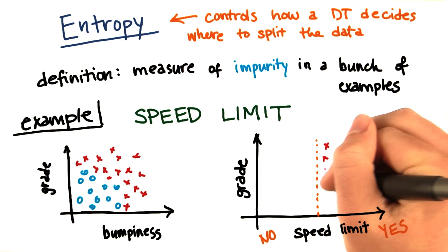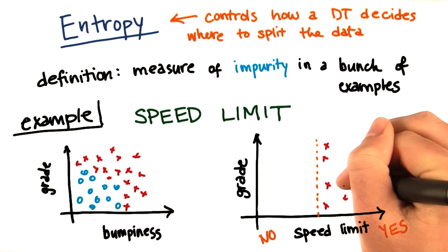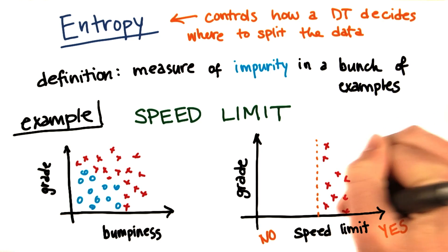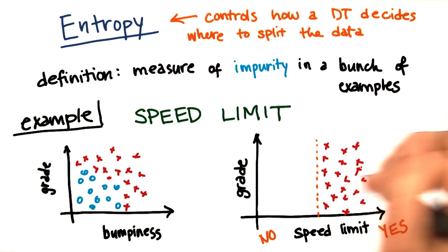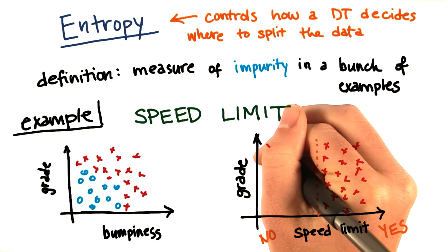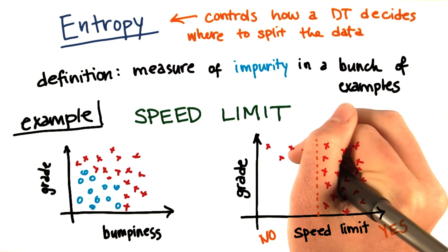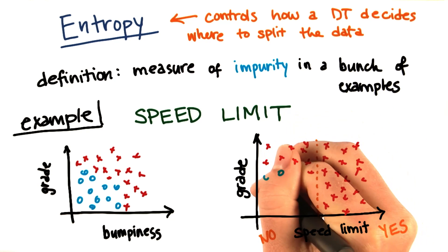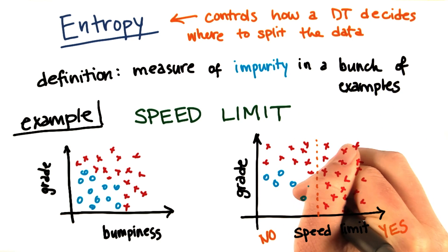So then when the speed limit is in effect, it doesn't matter what grade it is, everything's going to be slow. Whereas when the speed limit is not in effect, you still have to go slow when it's too steep. But now you can still go fast if it's flat enough, if the terrain is good.